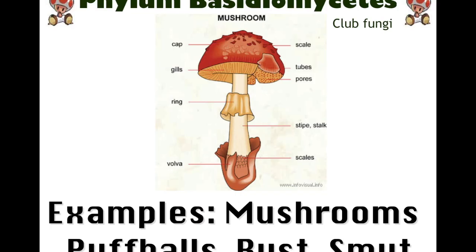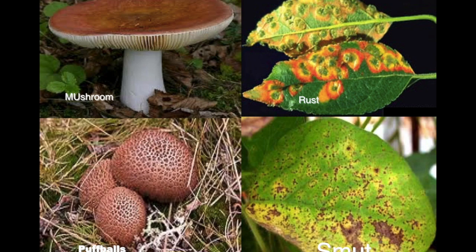The next phylum is Basidiomycetes. A great example is mushrooms, but also puffballs, rust, and smut — these are club-like fungi. The basic structural components of a mushroom you need to know include the cap, the gills, the spores, the stipe (also known as the stalk). Rust is a fungus — not the same as oxidation of metal — it looks a yellowish-red color, that's why it's called rust. Smut looks like dirt but it's actually a fungus.